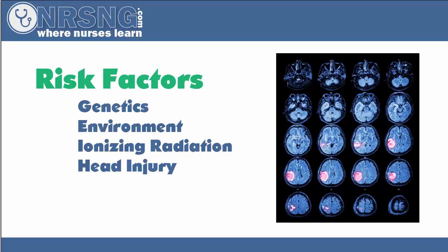One of the biggest risk factors is going to be genetics. Another one is going to be environment — how the patient was raised, what sort of environment they're growing in. Then another one would be ionizing radiation, if they've been exposed to radiation. And then lastly, previous head injury. If they've had a head injury in the past, this may be a risk factor for developing a tumor in the future. A tumor is really an uncontrolled, overgrowth of cells, and they can be benign or malignant.